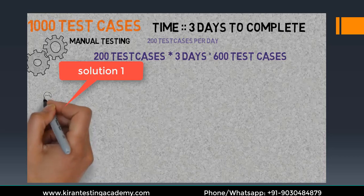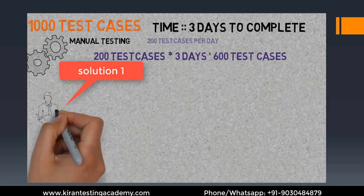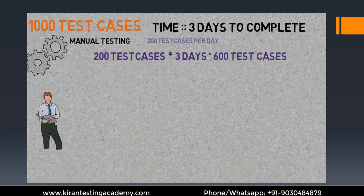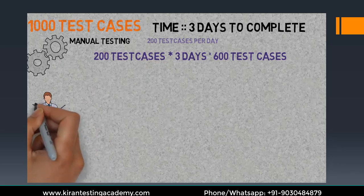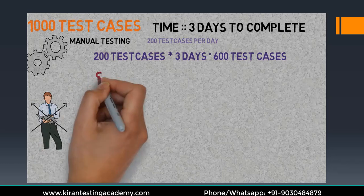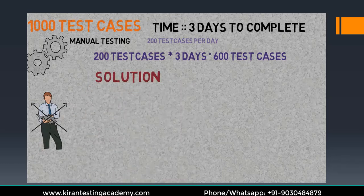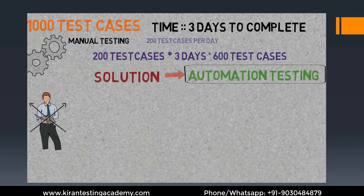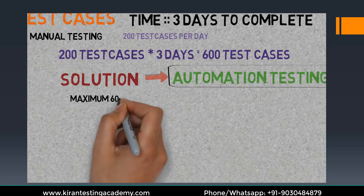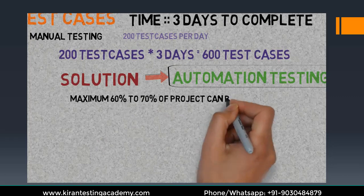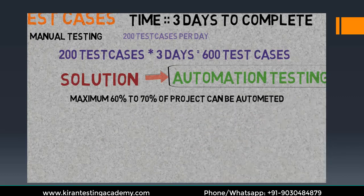What is the solution? Solution 1: I can hire someone and we both do manual testing and complete it in 3 days. But the test manager says there is no option to hire anyone right now. So here comes automation. Note this important point: we can't achieve 100% automation. The whole application can't be completely automated — we can automate a project up to 60 to 70%. That's it, not more than that.